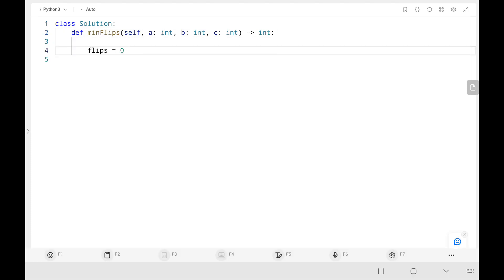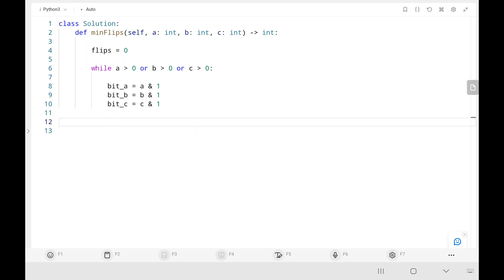So initially I am initializing flips as 0. Then I will be writing a loop where either a, b, c should be greater than 0. Then we are performing the bitwise AND with 1 in order to take the rightmost values from the binary representation. Then if c is equal to 0, I will add both a and b to my flips. Else if bitwise a and b are equal to 0 then I will increase the flip by 1. If it is already a valid case we can just avoid it.